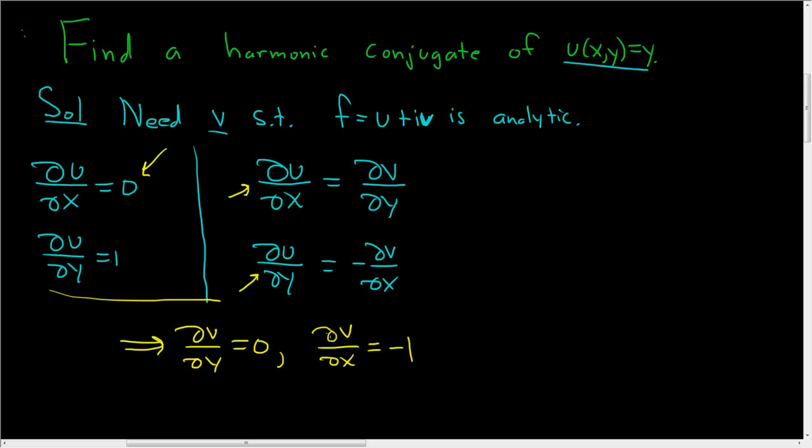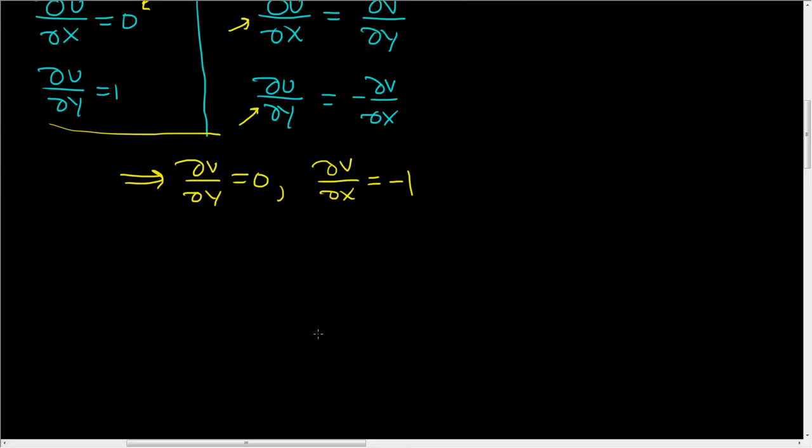And now we have to use these two equations and solve for v. So to do that, we just pick any one of these and integrate. Let's just take the first one. And we're going to integrate with respect to y. So v(x,y), well, we get a constant. But in this case, the constant is an unknown function of x. I'll call it little g.